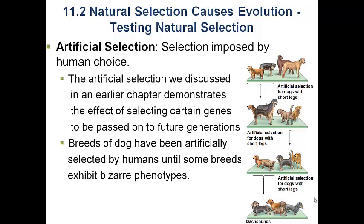Nothing like their wolf-like ancestors, but the result of intensive selective breeding over long periods of time. You can look at this as a test for natural selection — natural selection does the same thing except the environment is doing the selecting. If we impose a selective pressure on a group of organisms for a long period of time, does that change the phenotype? The answer, if we look at the results of artificial selection, is obviously yes.